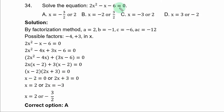Question 34. Solve the equation 2x² - x - 6 = 0. By the method of factorization,